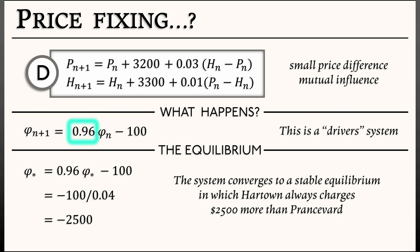That means at this stable equilibrium, Hartown always charges $2,500 more than Pransvard. It's as if they've colluded to fix the tuition. And every year, their tuition goes up by exactly the same amount so as to keep the price difference between them at 2,500.